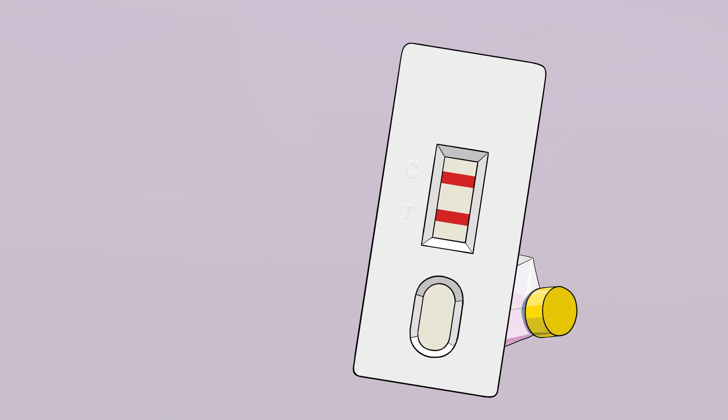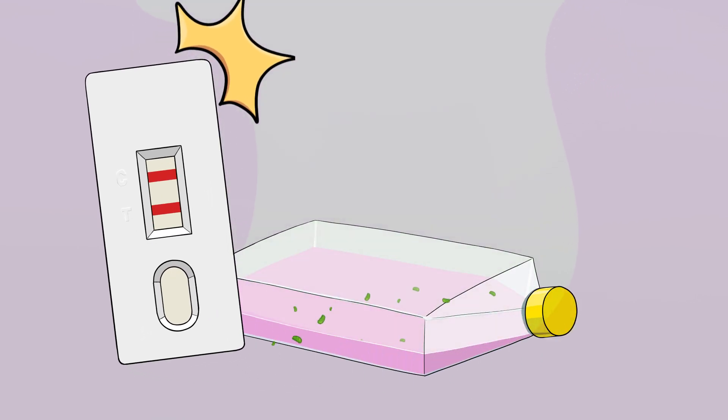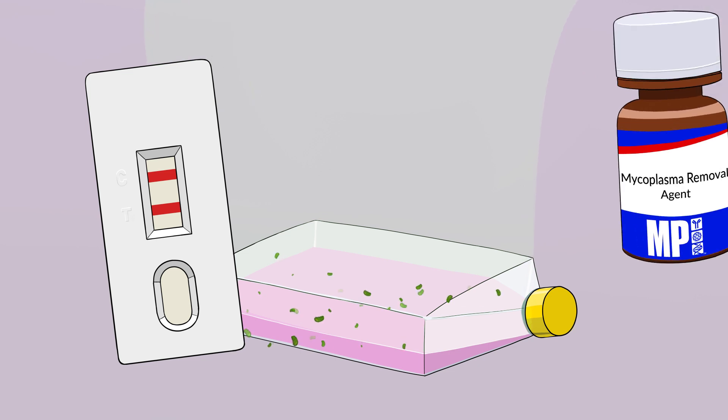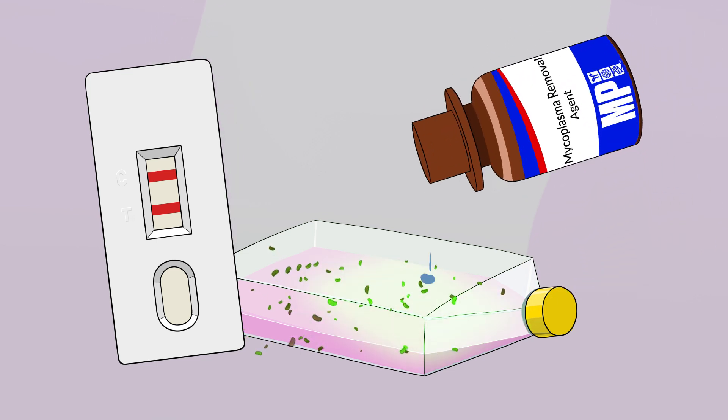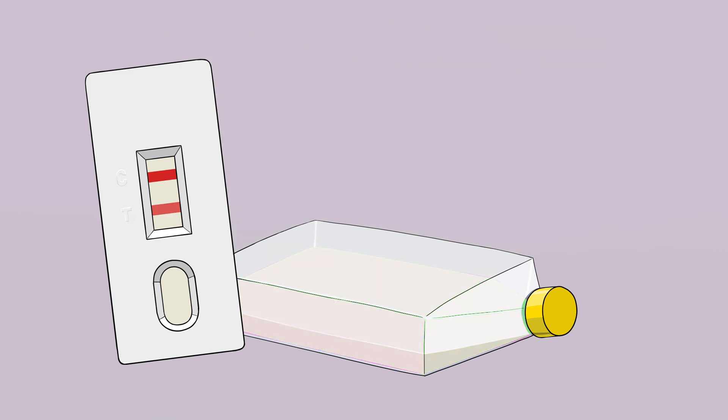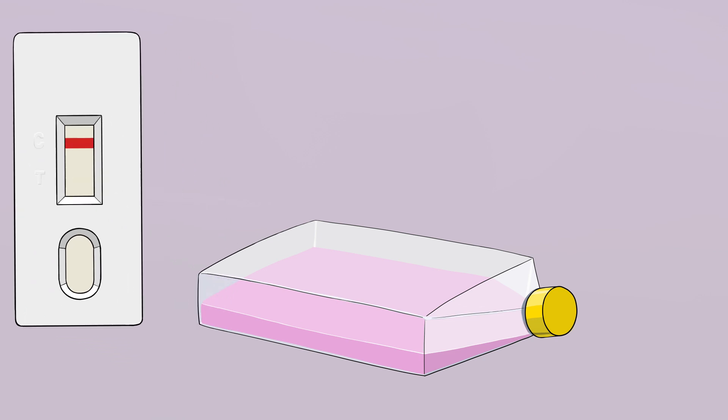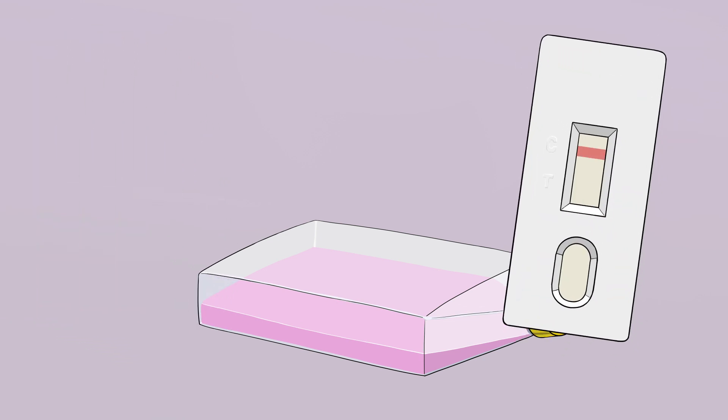If your test result is positive, don't panic. We have the solution for you. Your culture can be effectively treated with the Mycoplasma Removal Agent or MRA. Simply treating your cell culture with MRA allows you to swiftly combat mycoplasma contamination without losing your precious cells. After one week of treatment, retest your cell culture using MycoVisible Mycoplasma Rapid Test again.